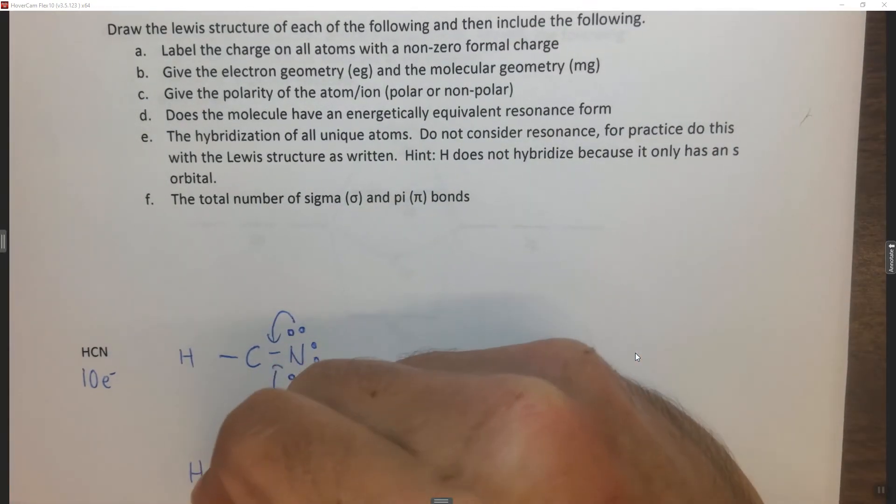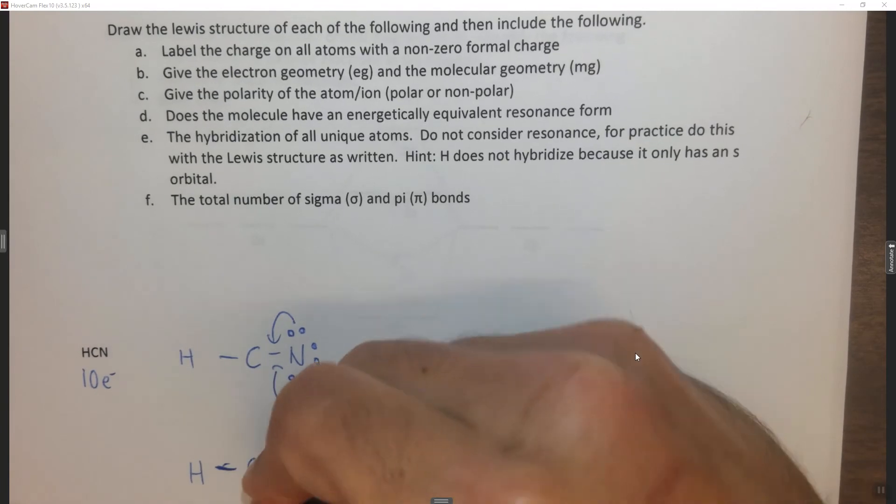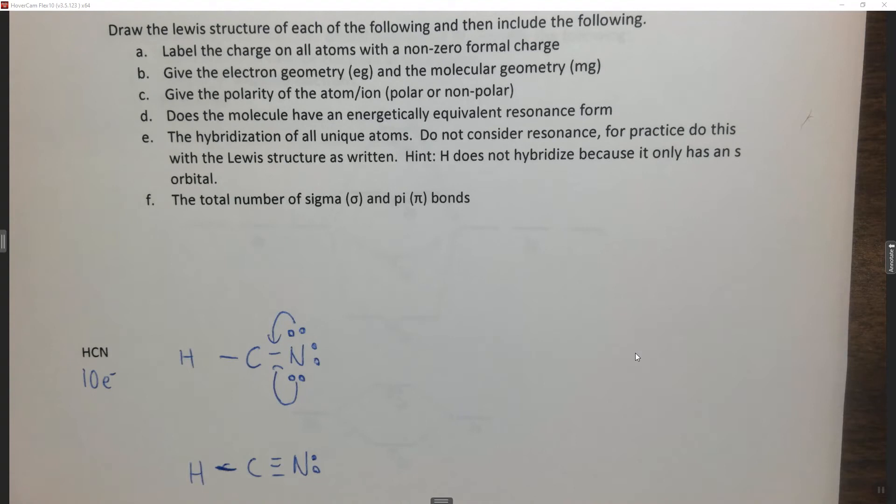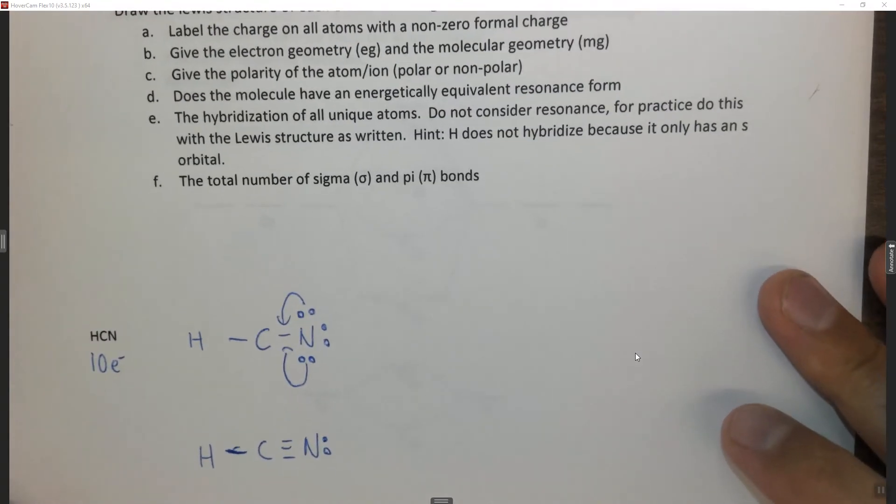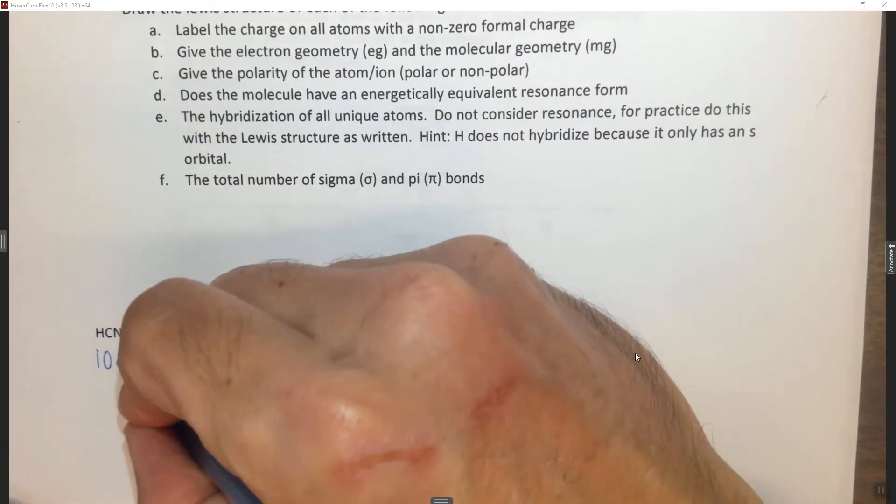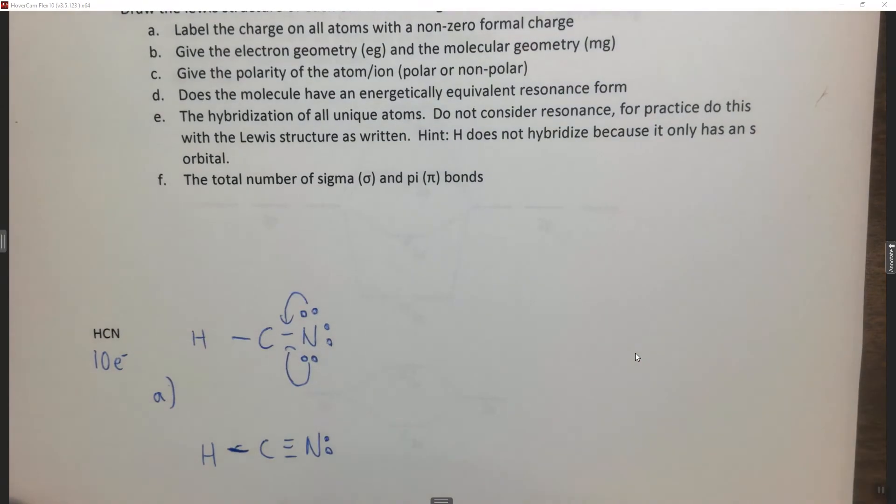So if we do H bonded to C, triple bonded to N, and now N just has the one lone pair. Now we can calculate the formal charges. So this is A. The carbon is in 4a, so it wants 4 valence electrons.